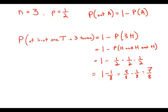Seven over eight is the probability of getting at least one tail in three tosses. And this is answer choice D.